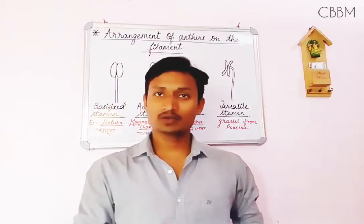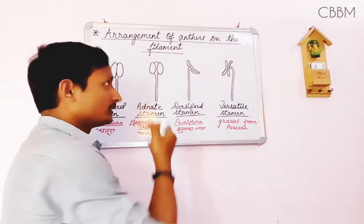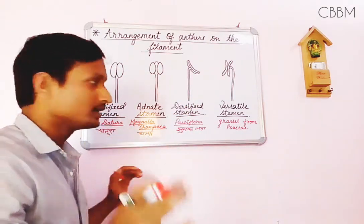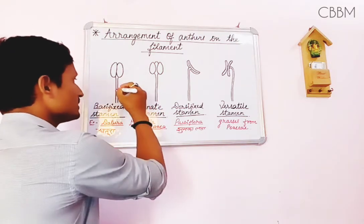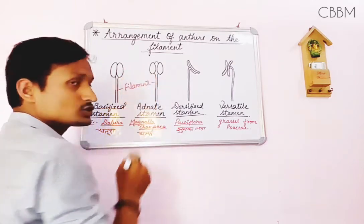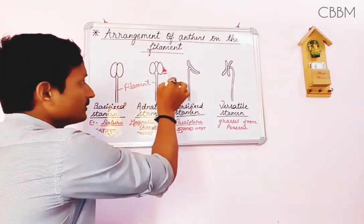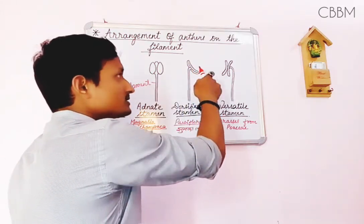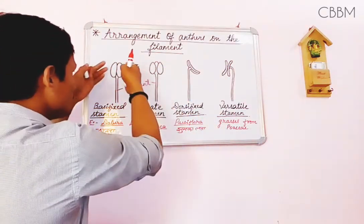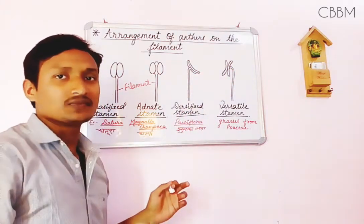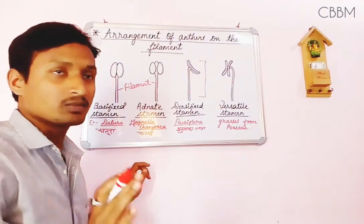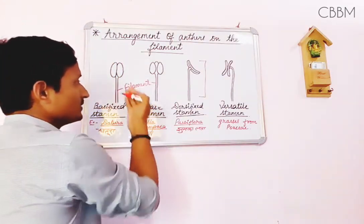Without further delay, let's get started. We are going to discuss the arrangement of anthers on the filament. On this basis, four types are identified. The stamen consists of a filament — the stock-like structure — and the anther, which is the uppermost section. Constituting both of these structures together is called a stamen.